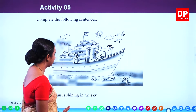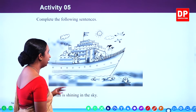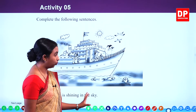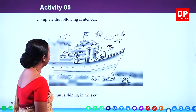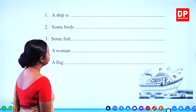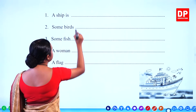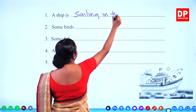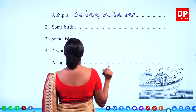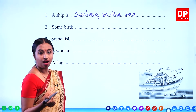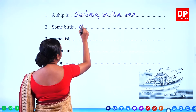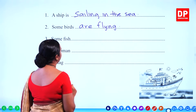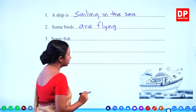The man is sleeping. The sun is shining in the sky. In the picture, a big ship is sailing and people are on it for a leisure trip. You can see many birds there. A ship is sailing in the sea. Some birds are flying. Some fish are swimming.